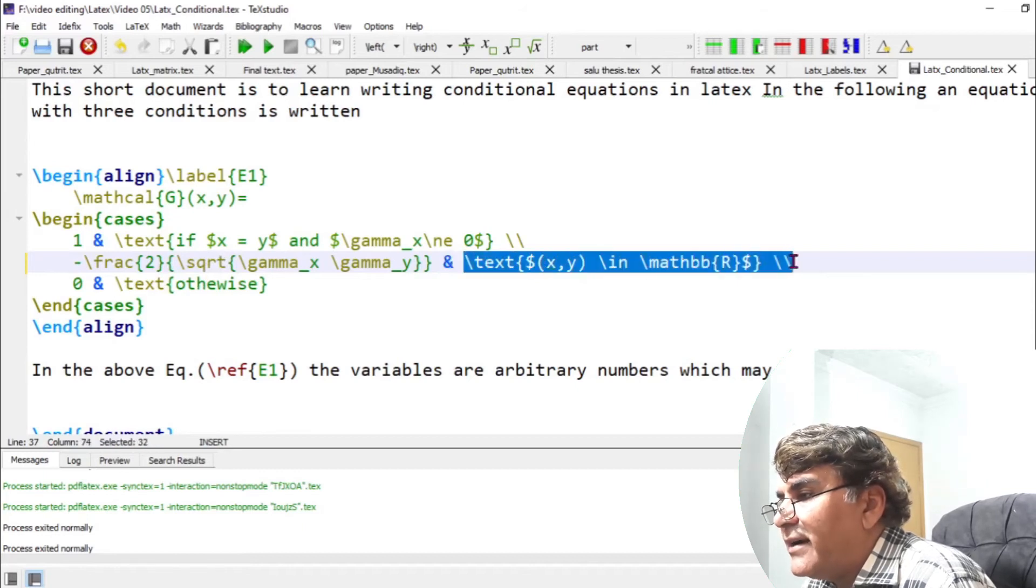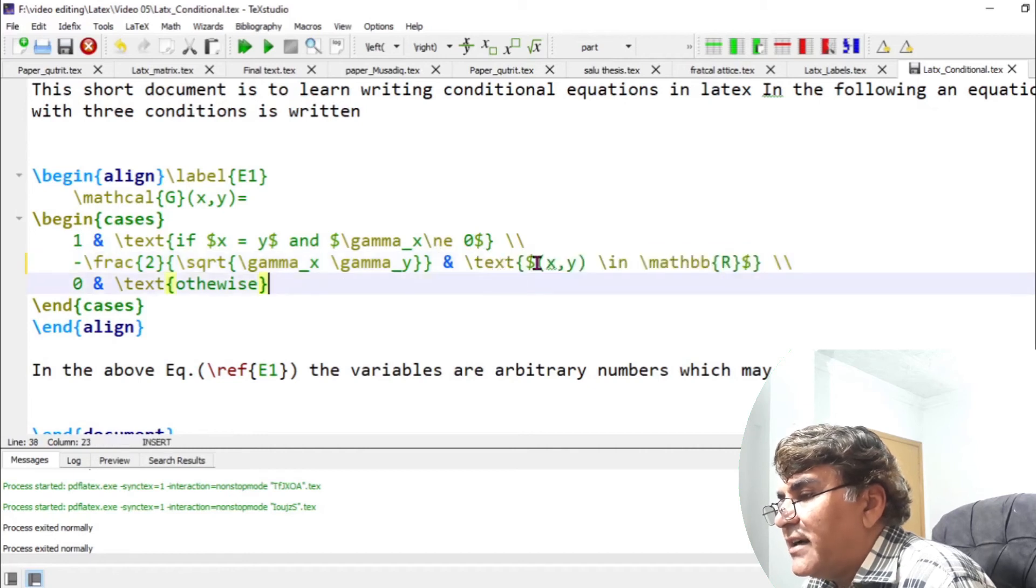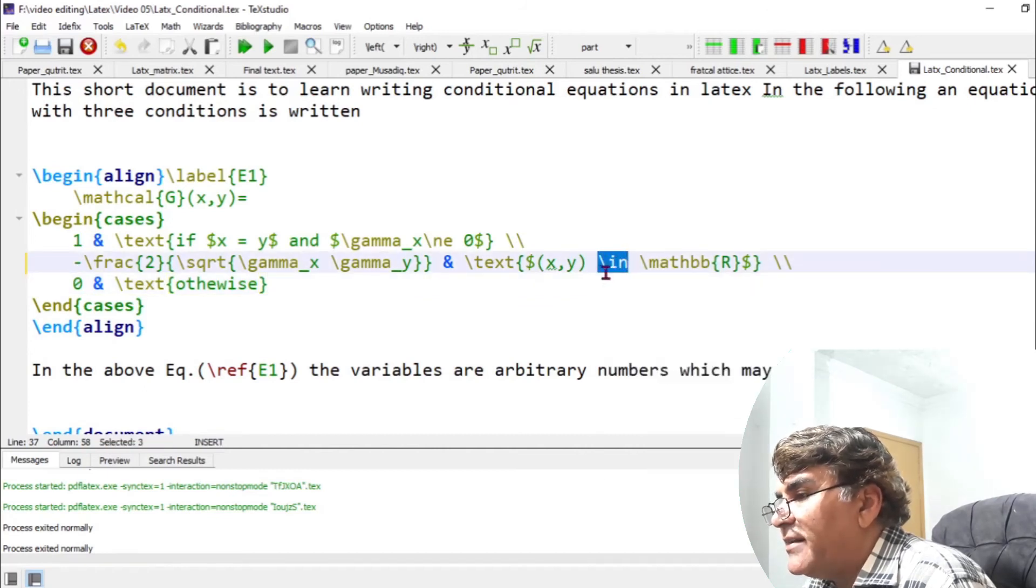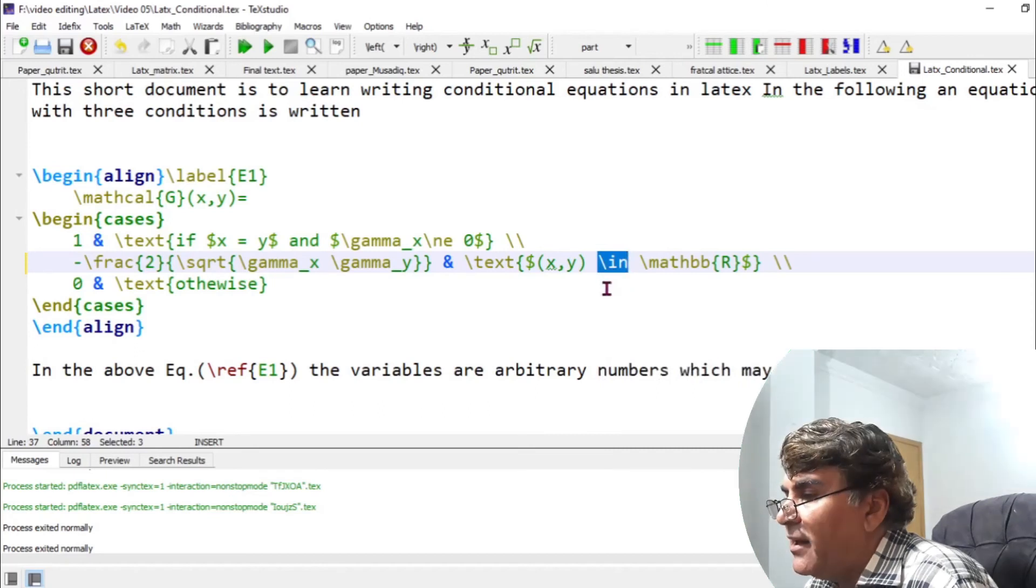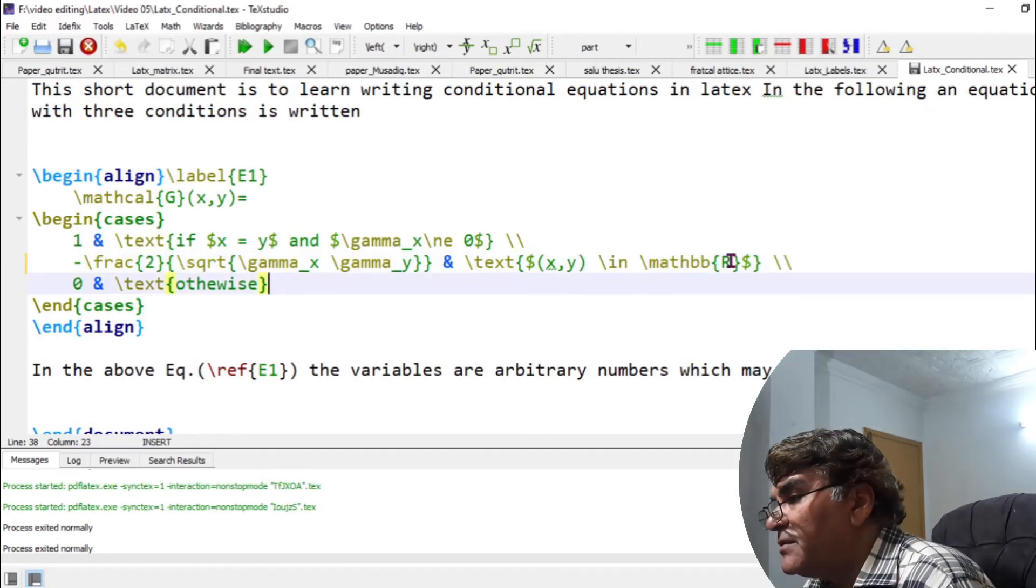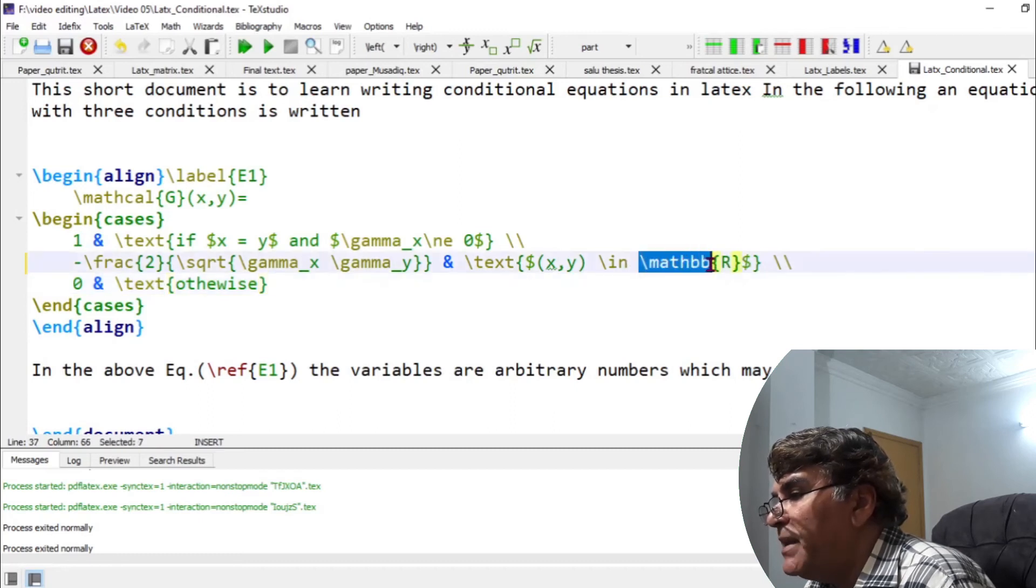Here again I write the same condition like I have written in the first line inside the text argument but here I add two other commands. Backslash in is a command used for belongs to symbol of mathematics and then the double line symbols can be introduced into maths by using mathbb command.